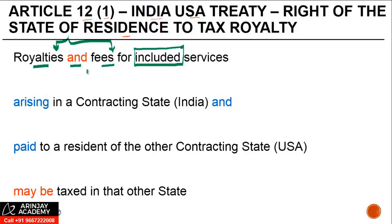The first condition is that there has to be a royalty or fee for included services arising in a contracting state and paid to a resident of the other contracting state. India and USA are not explicitly named in the treaty — we've added that for context. So, royalty and fee for included services arising in India.